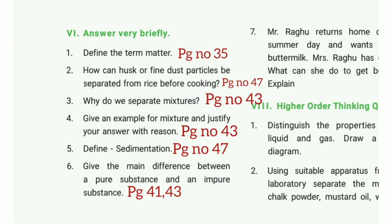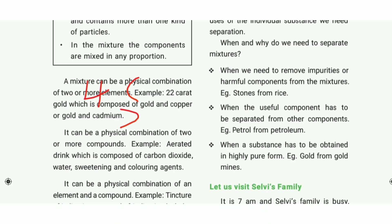Fourth question: give an example for a mixture and justify your answer with reason. Take page number 43. Example: 22-carat gold, which is composed of gold and copper or gold and cadmium.